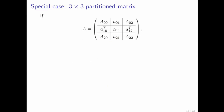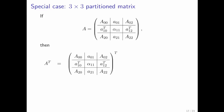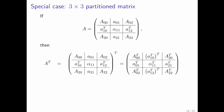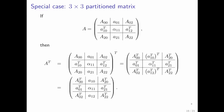Here's the special case where we partition the matrix into a 3-by-3 partitioned matrix, and this is going to become very important. What happens if you transpose it? You have to transpose the symbols and put a transpose on each of them. But then you recognize that if you transpose a row vector, what you end up with is a column vector, and transposing something twice just undoes the transpose. So what was the row vector A₁,₀ transpose now becomes the column vector A₁,₀.